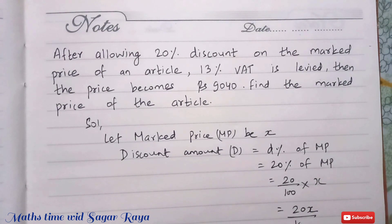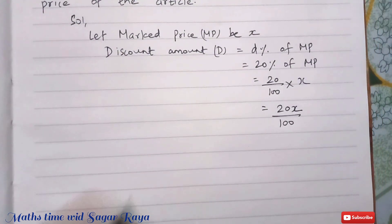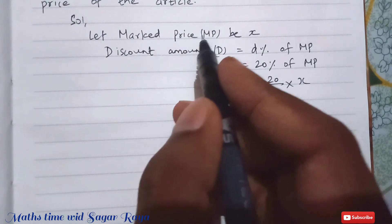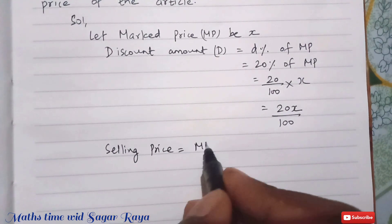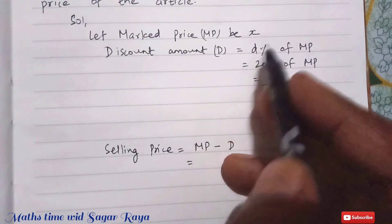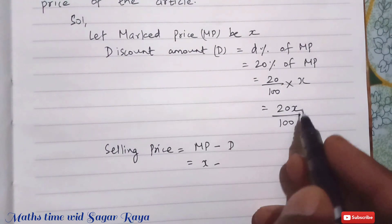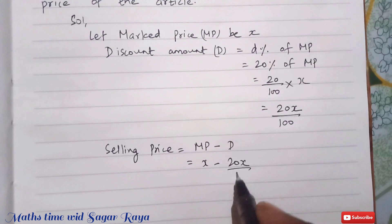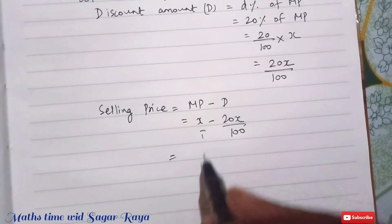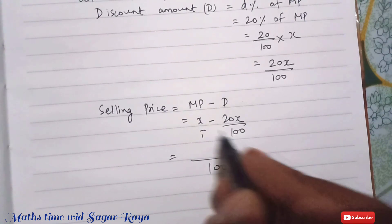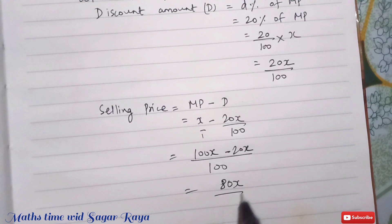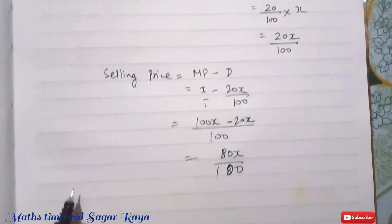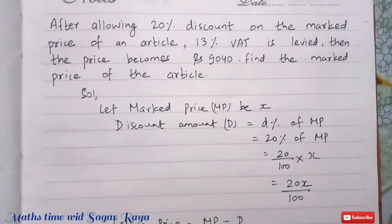Selling price equals mark price minus discount, so SP equals X minus 20X over 100. Taking LCM of 1 and 100, which is 100, we get 100X minus 20X over 100, which equals 80X over 100.